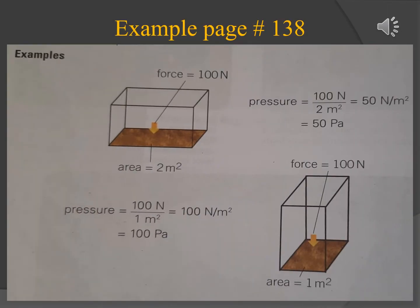Let's solve one example related to measuring pressure. In the first block, a force of 100 newtons acts upon the base area of 2 meter square, so pressure equals 100 newtons over 2 meter square, which equals 50 newtons per meter square, or pressure equals 50 Pascal.